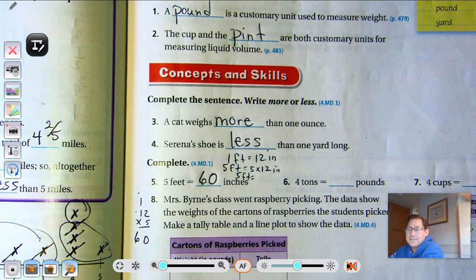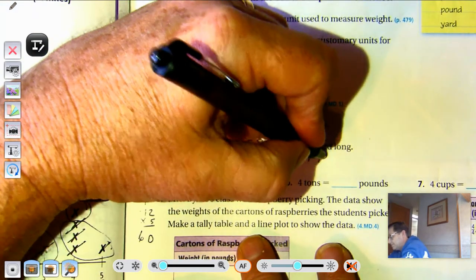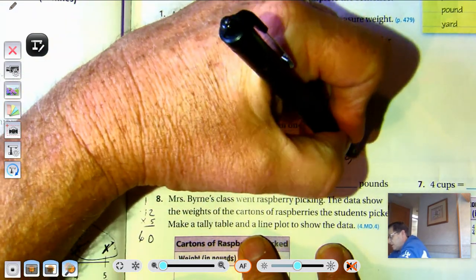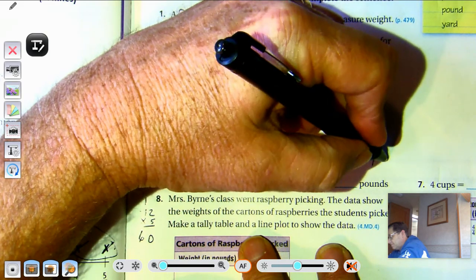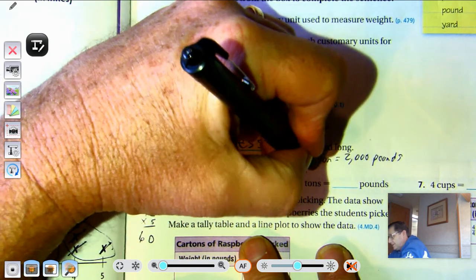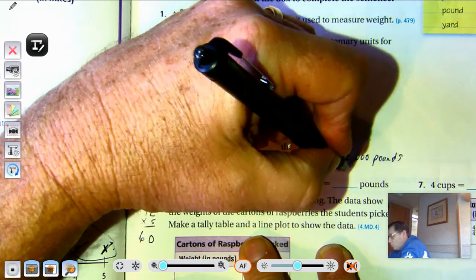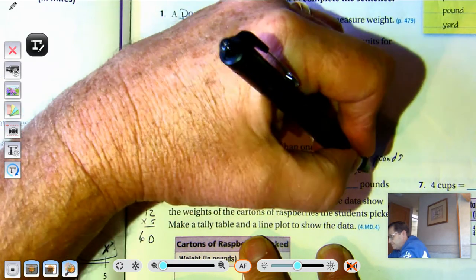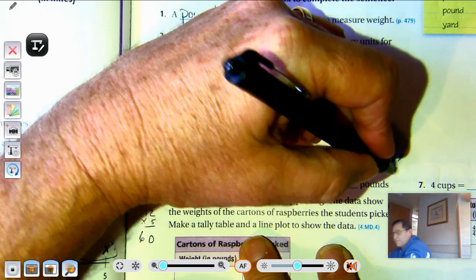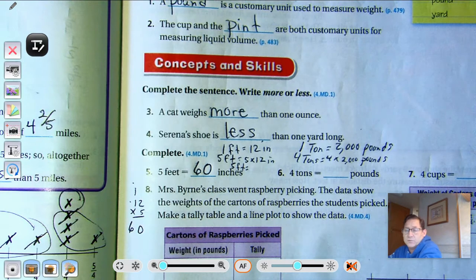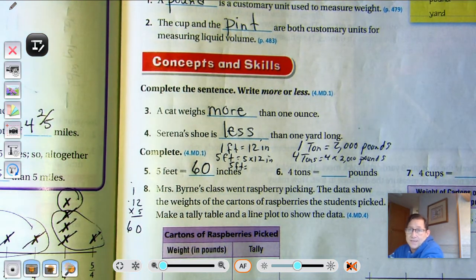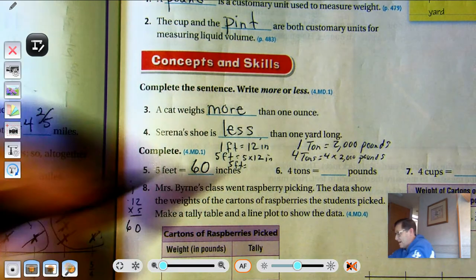Four tons. Well, we know one ton is 2,000 pounds. So four tons would be four times 2,000. That's a simple multiplication problem. Basic math fact is four times two, so 8,000 pounds.